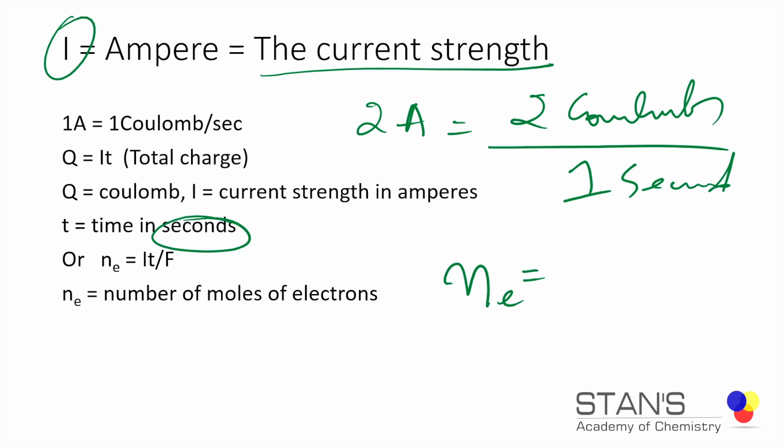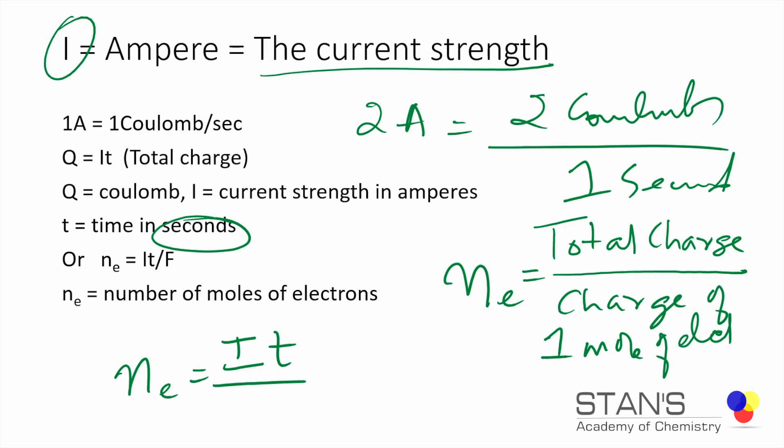Now this equation is what we really need. ne, which represents the total number of moles of electrons that are flowing through a circuit, can be calculated if you know the total charge and charge of one mole of electrons. Or we can say ne equals It by F. In simple terms, this is the equation you've got to remember.